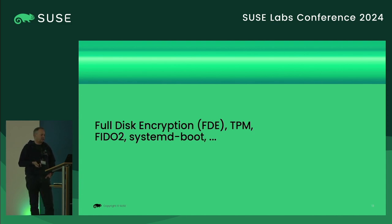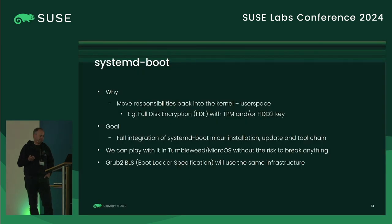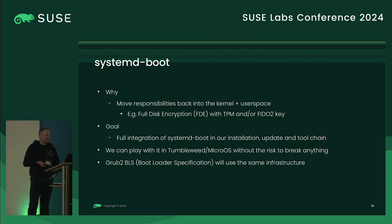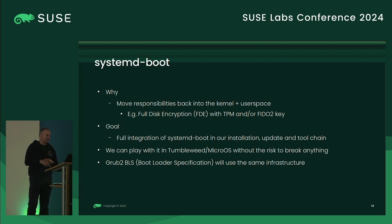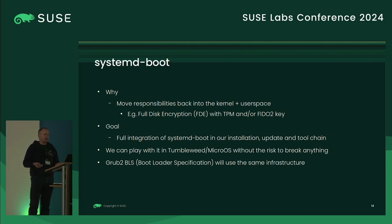The next topic is full disk encryption with TPM, FIDO2 keys, and systemd-boot. We decided to integrate systemd-boot into Tumbleweed and MicroOS because we want to move the responsibility from the bootloader back to the kernel and user space. Think about GRUB2 handling encryption with a FIDO2 key — all the USB stack features and FIDO2 key features would need to be part of GRUB2, which is next to impossible to implement and maintain. Our goal was full integration of systemd-boot into installation, update, and toolchain.